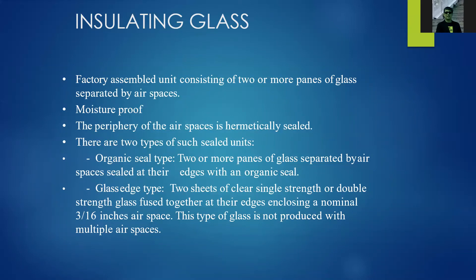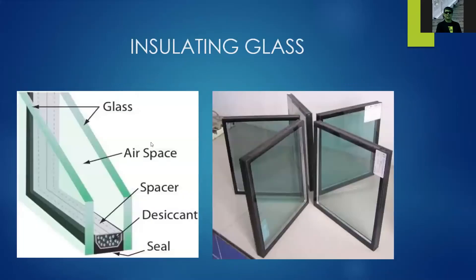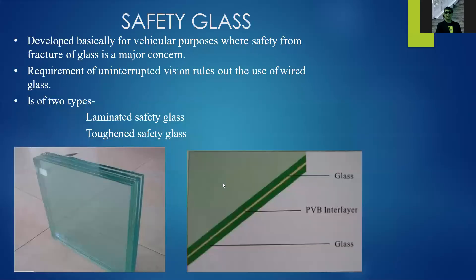Insulating glass is a factory-assembled unit consisting of two or more panels of glass separated by an air space. The moisture-proof periphery of the air space is hermetically sealed. There are two types: the organic seal type and the glass edge type. The air space prevents the transfer of heat or noise to the other side of the window or structure. Insulating glass is commonly used in curtain walls exposed to direct sunlight, particularly on east-west facing exposures.